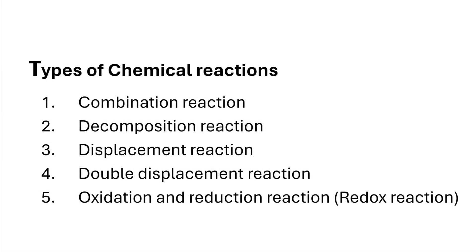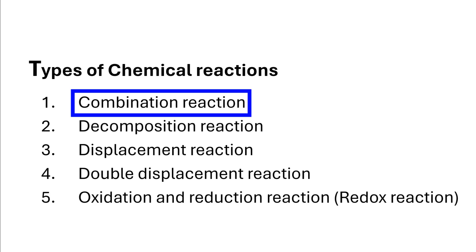There are many different forms of chemical reactions that take place in nature. These can be categorized into five major types: combination reaction, decomposition reaction, displacement reaction, double displacement reaction, and oxidation-reduction reaction or simply redox reaction. In this video, we will be demonstrating a few laboratory examples of the first type, which is combination reaction.